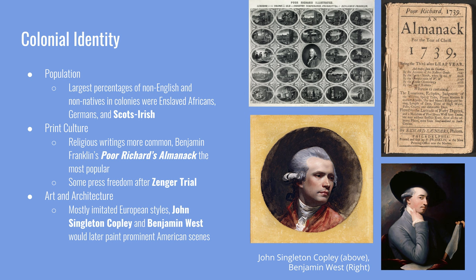The freedom of the press expanded during this time period through the Zenger Trial. It covered the issue of libel in newspapers. Peter Zenger, the publisher of the New York Weekly Journal, had published something critical of a royally appointed governor and was accused of printing libel because it was damaging to the governor's image. When this came to a judge, the judge ruled it was not libel because what was printed was true. Therefore, it opened up a Pandora's box of newspapers able to criticize colonial governments and royal governors.